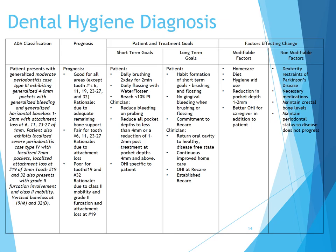Patient and treatment goals: short-term goals for the patient include daily brushing twice a day for two minutes, daily flossing with a water flosser, and reaching less than a 10% plaque index. For the clinician, short-term goals are to reduce bleeding on probing, reduce all pocket depths to less than 4 millimeters or a reduction of 1 to 2 millimeters post-treatment at pocket depths 4 millimeters and above, and to provide OHI specific to the patient. Long-term goals for the patient include habit formation of short-term goals, no digital bleeding upon brushing and flossing, and commitment to recare.